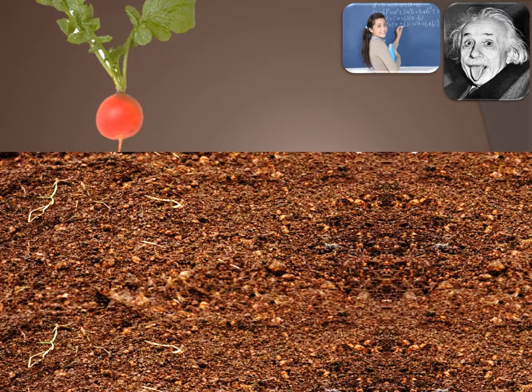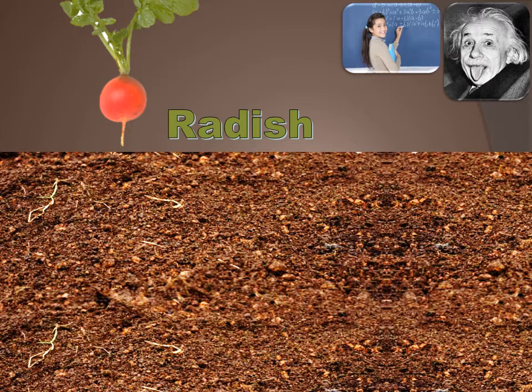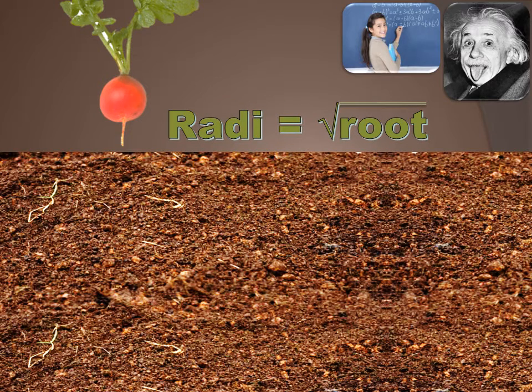Today, we're going to be talking about radishes — well, only for a couple of minutes, and only because the word 'radish' comes from a Greek word, 'rati' or 'radix,' which means root. And we're going to be talking about mathematical roots today.